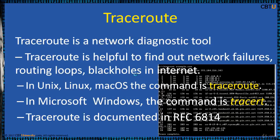The original TraceRoute program was written by Van Jacobson in 1987. In Unix, Linux, and Mac OS, the command is 'traceroute', and in Microsoft Windows, the command is 'tracert'. This tool displays the path and measures the transit delays of packets across hops in the network. The history of the route is recorded as the round-trip times of packets received from each successive host or hop in the route. The sum of the mean times in each hop is a measure of the total time spent to establish the connection.